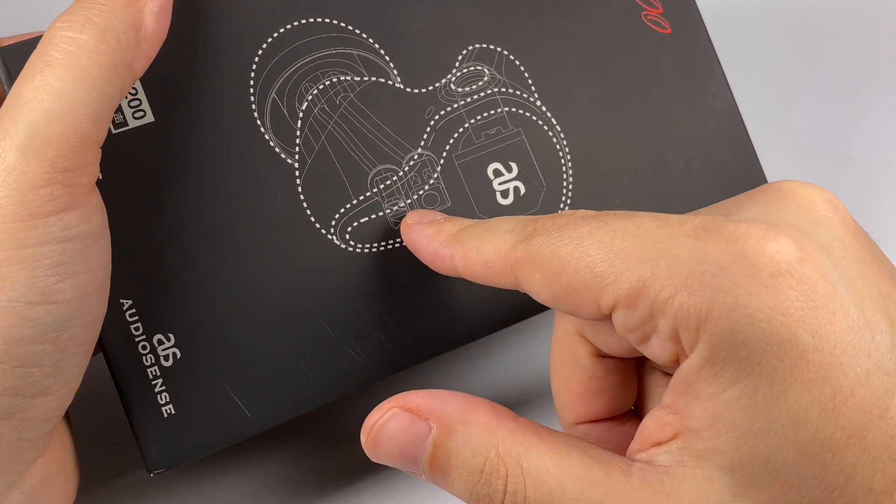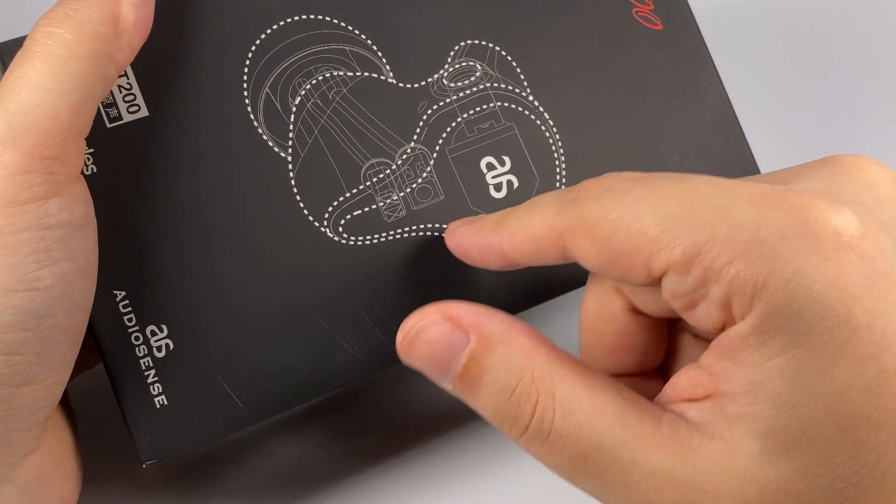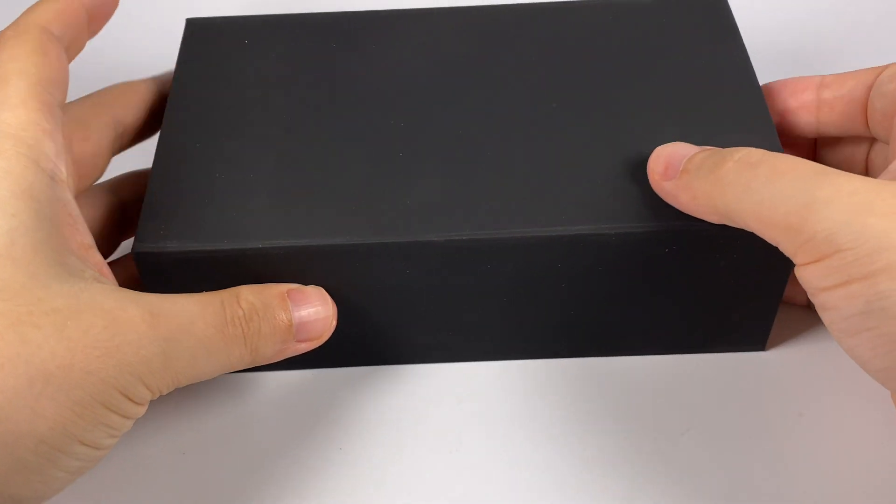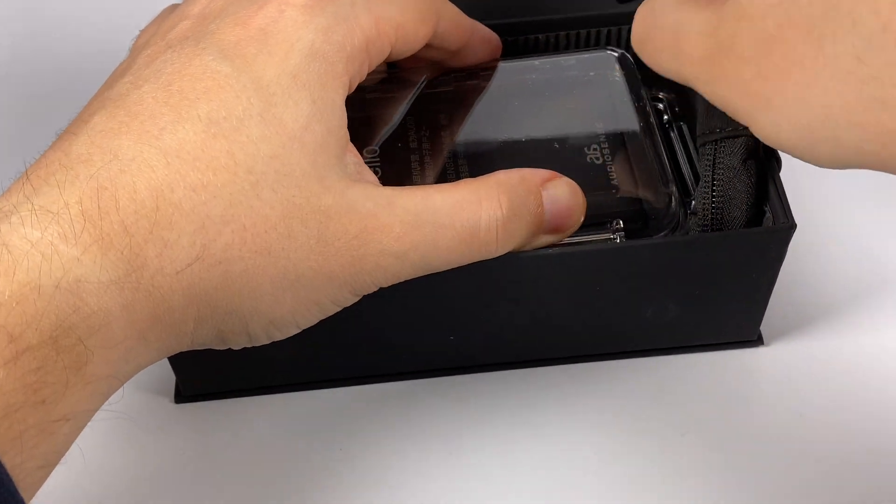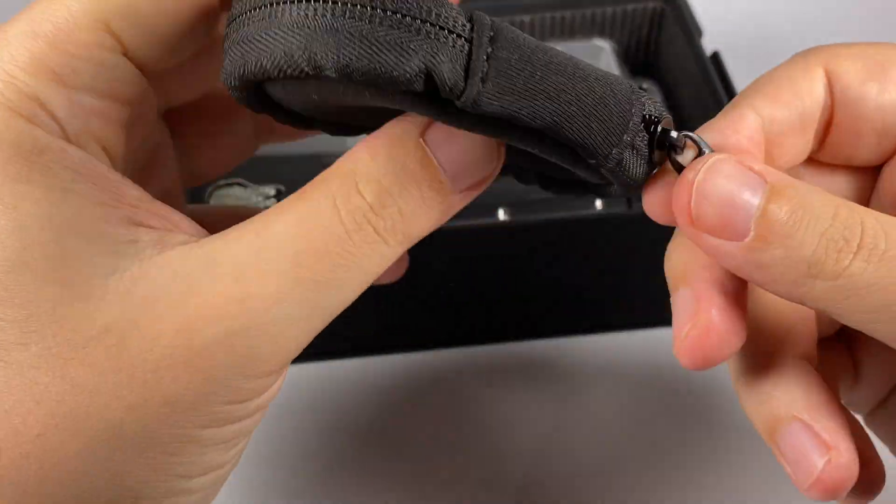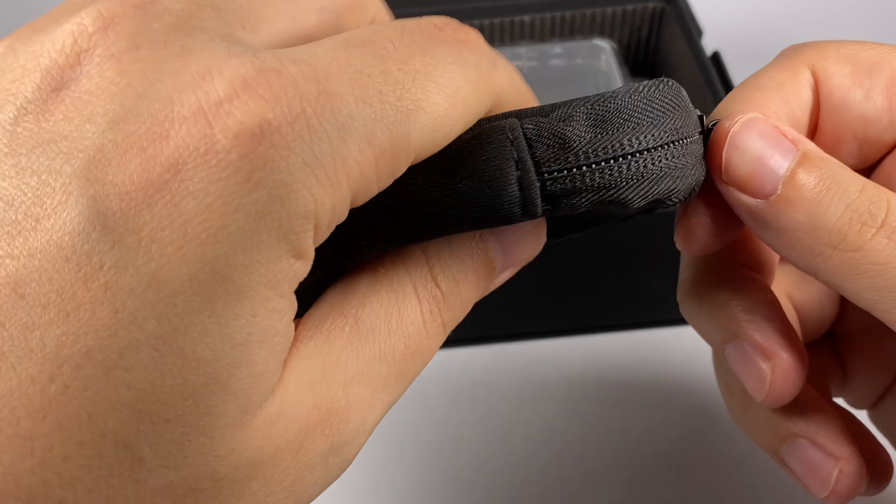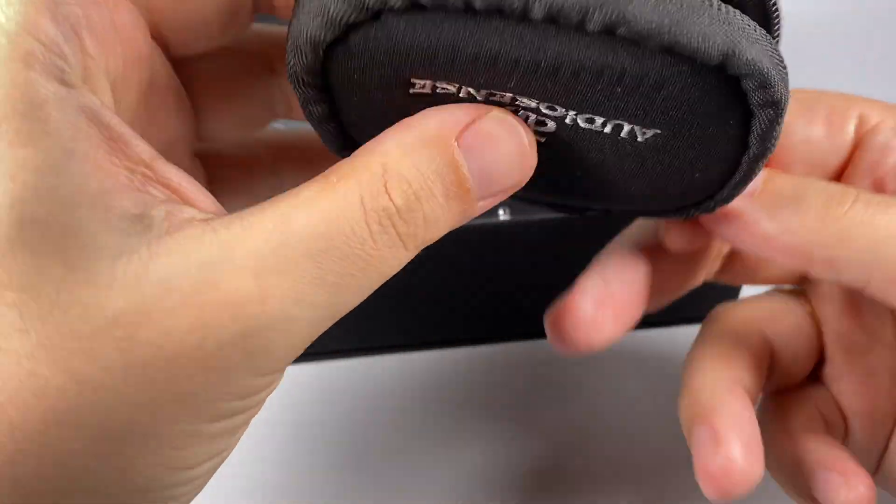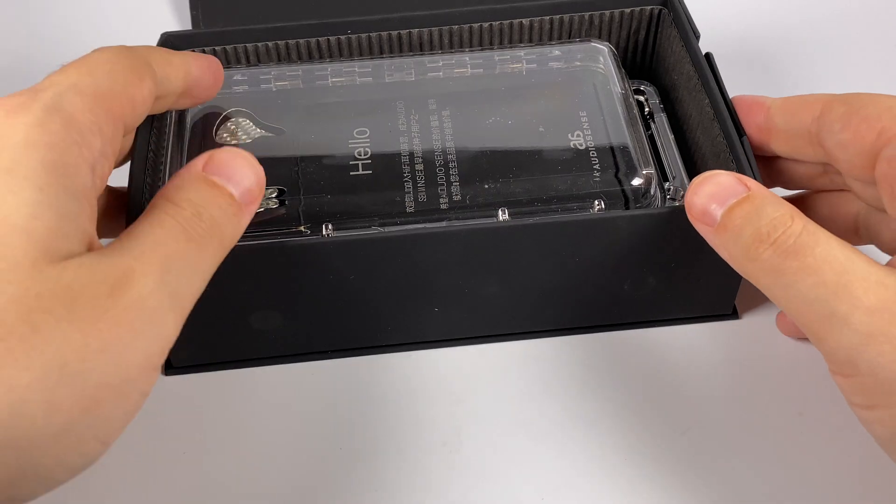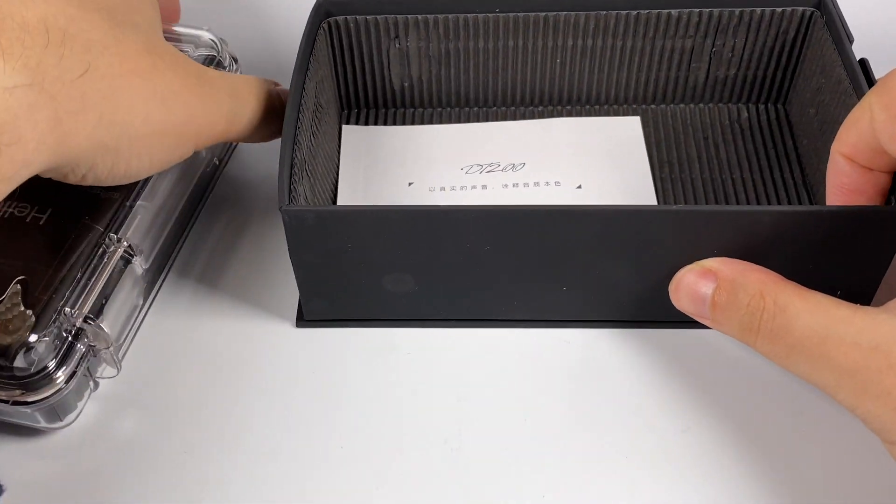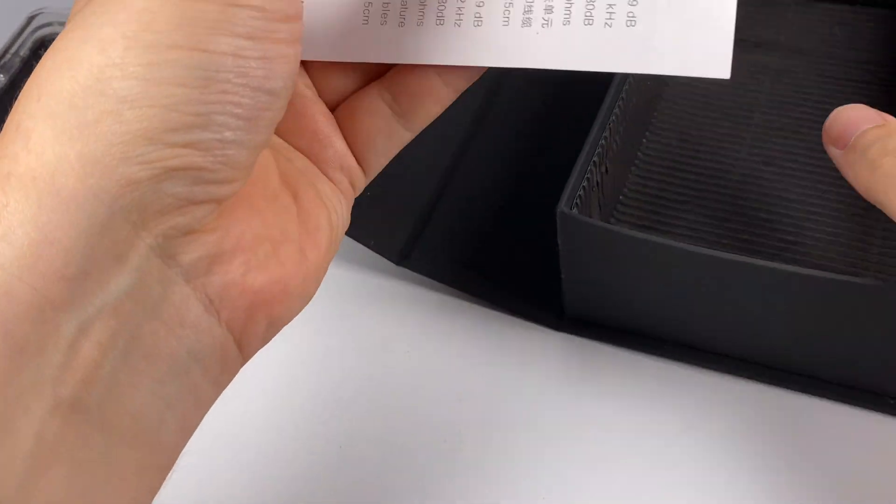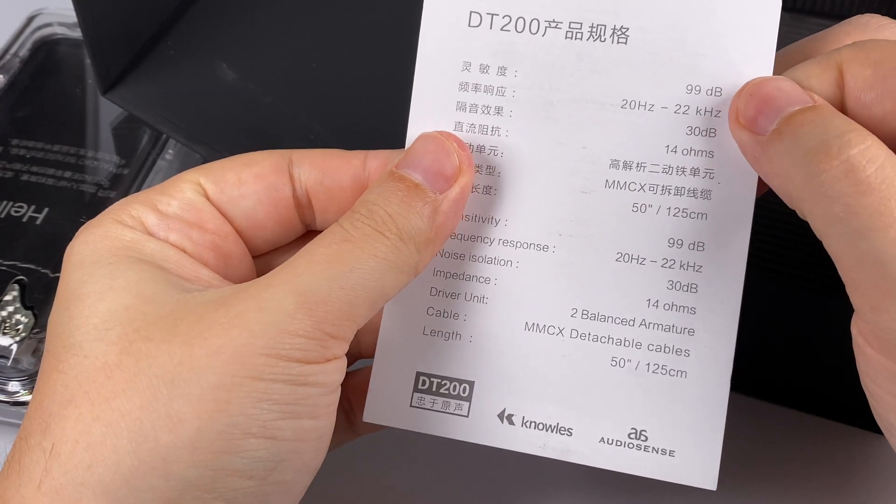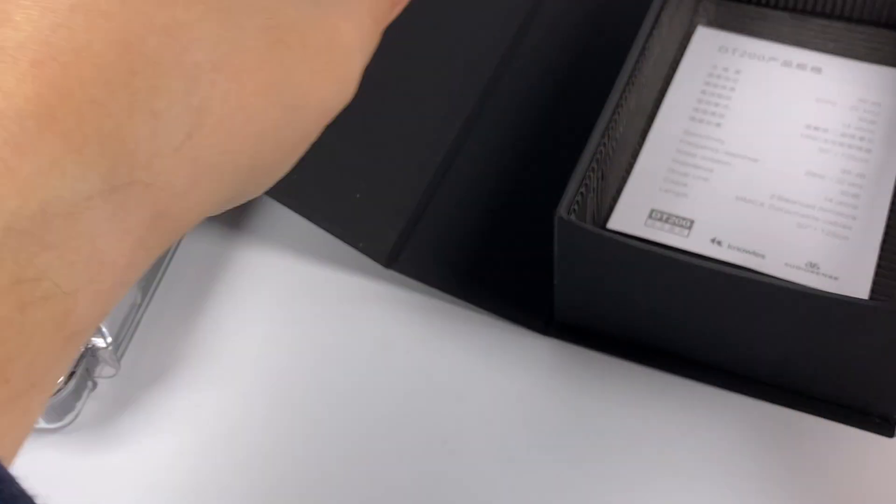Of course, inside of the outer box, we will get the inner box. They put some storage pouch, or actually maybe it's a pouch from the AQ7, so I'm not sure about this pouch, is it in the accessory set of this model or not. Here is the manual. So 99 decibels and 14 ohms of impedance, okay.